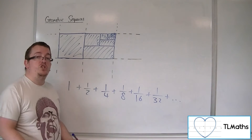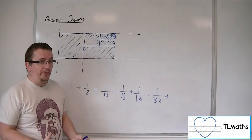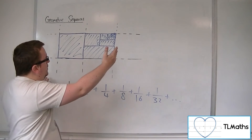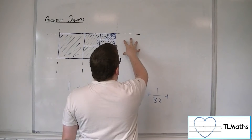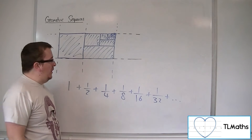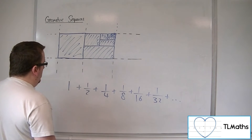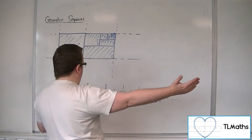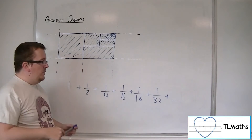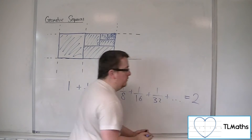In practical terms, I can never reach 2, but I can get as close as you want to it. And I'll never start shading in the next square along. So what I can say is that adding up this infinite series must be equal to 2.